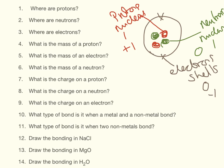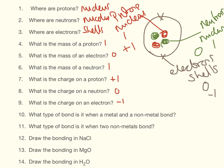I'll just write that out nice and neatly for you so you can see it a bit better. What type of bonding is it between a metal and non-metal? That is ionic. Between two non-metals it is covalent.